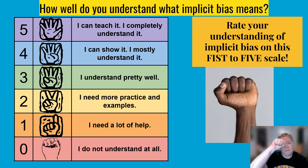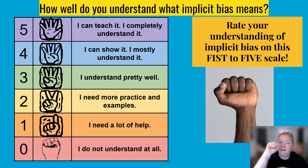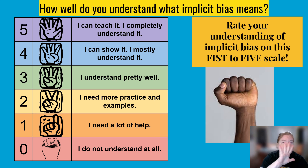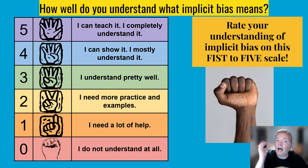Let's do a one-to-five check. One means I don't understand implicit bias at all. Five means I understand it completely — I could teach it, I could explain it to someone else.